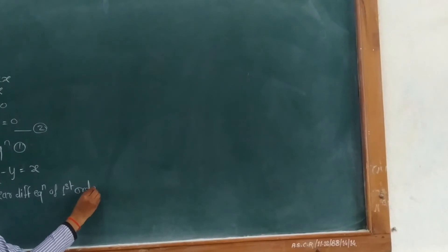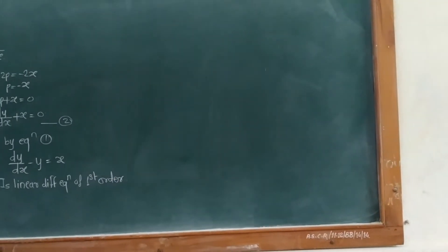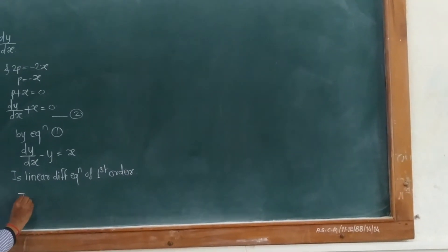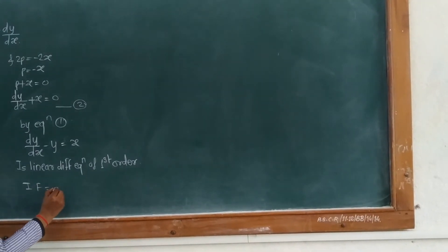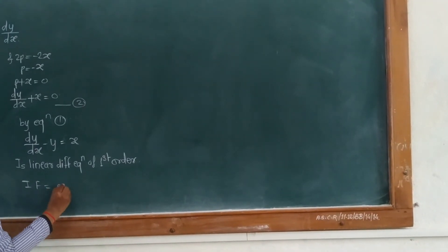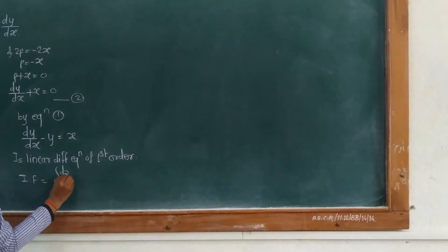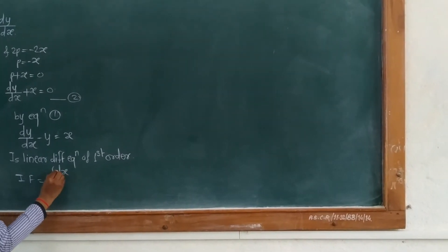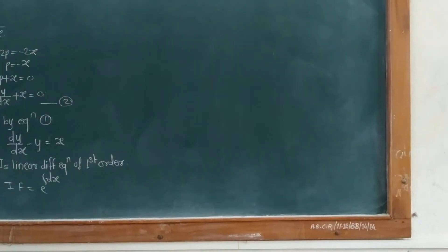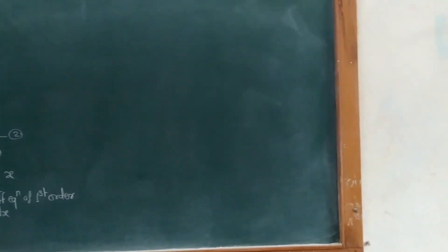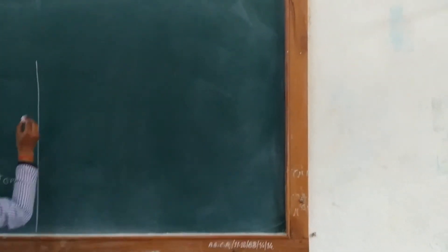The solution of the linear differential equation is y times I equals the integration of Q times I plus c. Substituting the integrating factor, we get y into e raised to minus x equals the integration of x into e raised to minus x dx plus c.